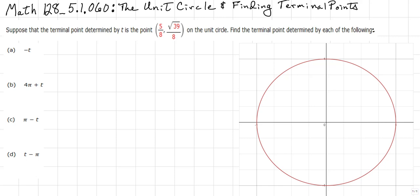Suppose that the terminal point determined by t is the point at 5/8 comma square root of 39/8 on the unit circle. Find the terminal point determined by each of the following: A) negative t, B) 4π plus t, C) π minus t, and D) t minus π.